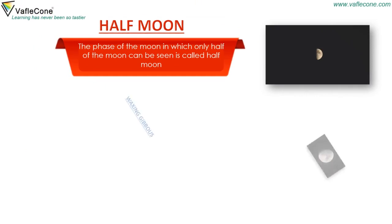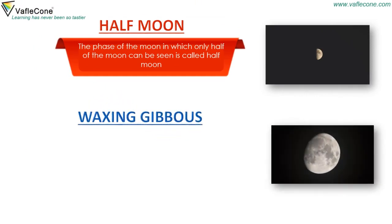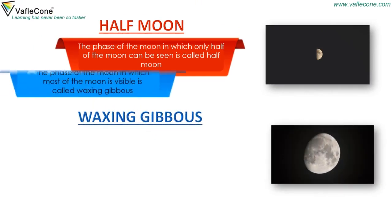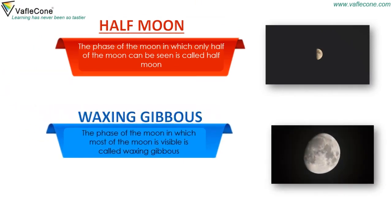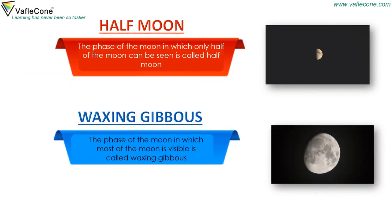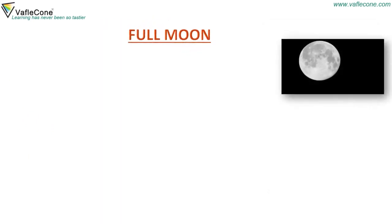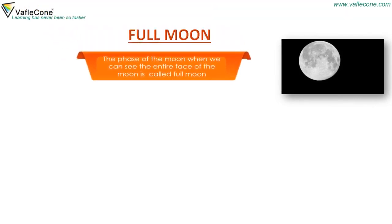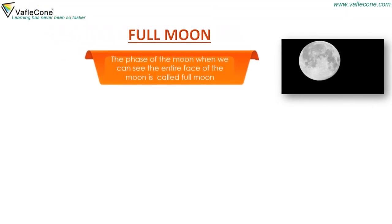Waxing Gibbous: The phase of the moon in which most of the moon is visible is called waxing gibbous. Full Moon: The phase of the moon when we can see the entire face of the moon is called full moon.